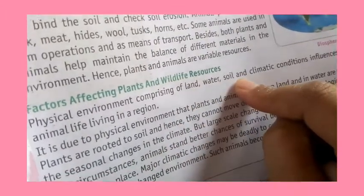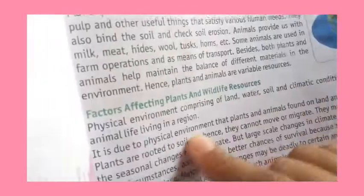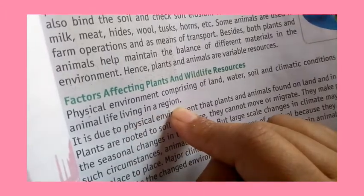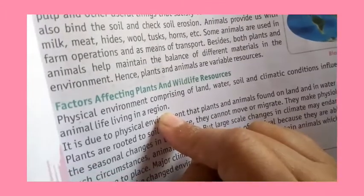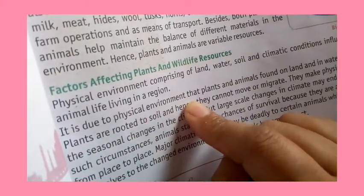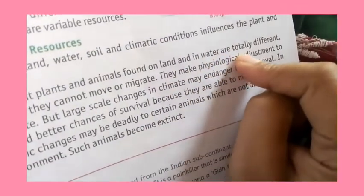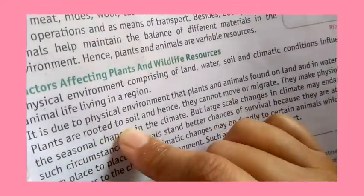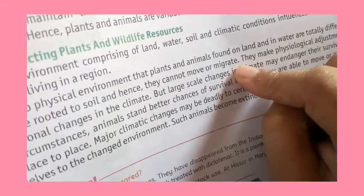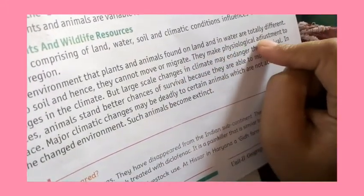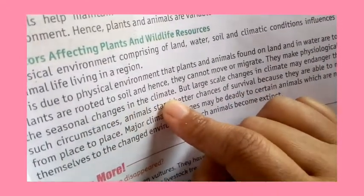The physical environment — comprising land, water, soil, and climatic conditions — influences the plant and animal life living in a region. Plants and animals found on land are totally different from those found in water. Plants rooted in soil cannot move or migrate; they make physiological adjustments to seasonal changes in climate.